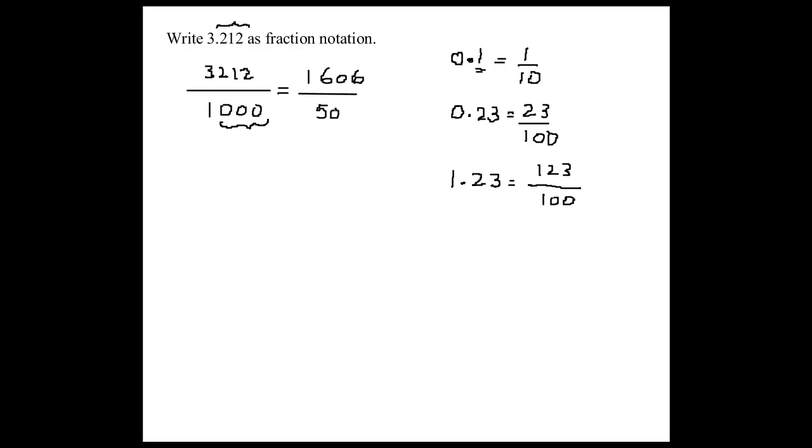Can I reduce this even more, Richard? Yes, you can still reduce by 2 because the last numbers are even. Very good, so tell me what do you get? 803 over 250. Very good, so half of 1,606 would be 803 and half of 500 would be 250.